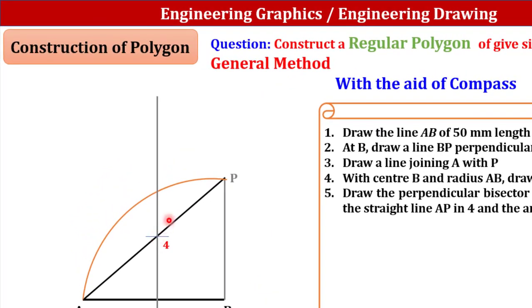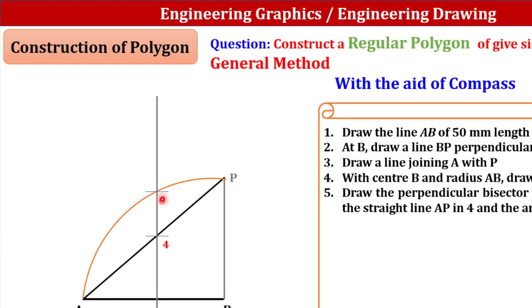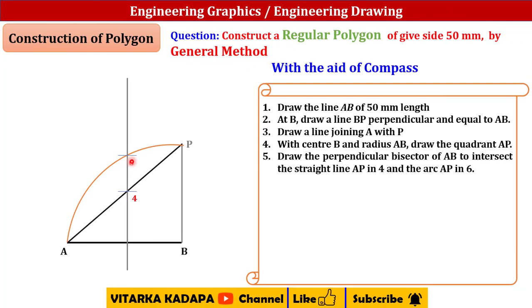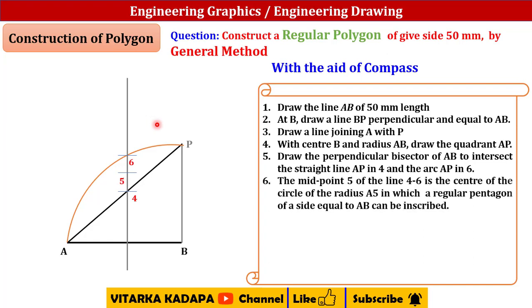This perpendicular bisector is going to touch the point AP at 4 as well as the quadrant AP at 6. Generally 4 and 6 is a simple case - for square it will have 4, for hexagon it will have 6. We can locate the midpoint and term that one as 5.